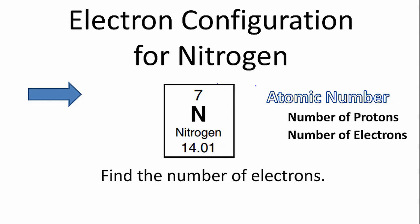The first thing we need to do to write the electron configuration for nitrogen is to find the number of electrons that will arrange around the nucleus. We can do that by looking at the periodic table, finding the element, and looking at the atomic number. That's the number of protons, but it's also the number of electrons.